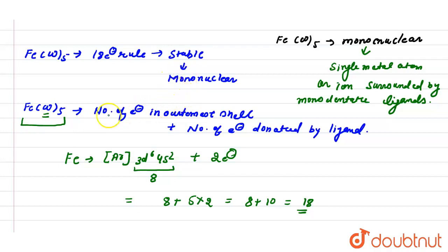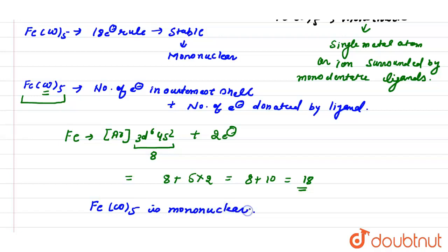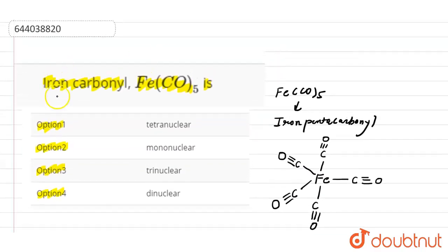Since it satisfies the 18-electron rule, this compound is stable. There is no need for another central metal atom to stabilize it, confirming that Fe(CO)₅ is a mononuclear compound. Therefore, the correct answer is option two: iron carbonyl is mononuclear.